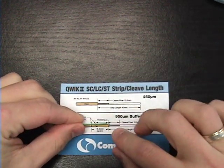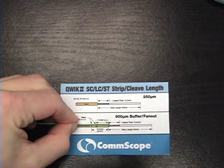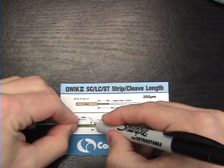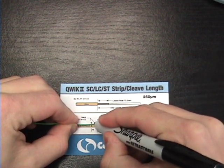Using the strip length gauge again, we can make a mark at 11.5 millimeters for LC fibers.